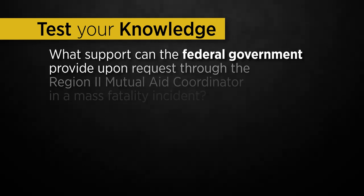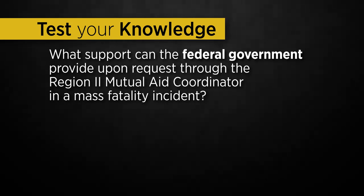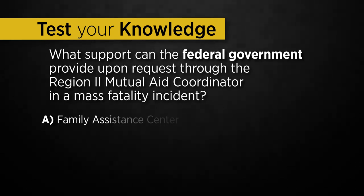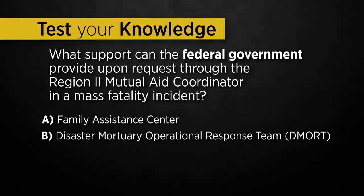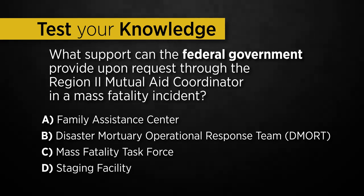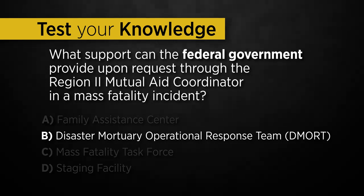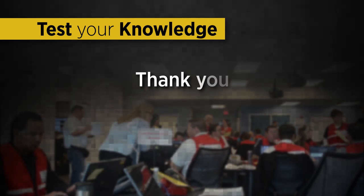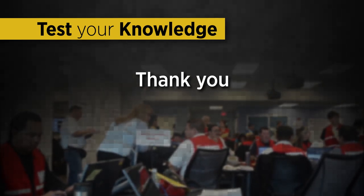What support can the Federal Government provide upon request through the Region 2 Mutual Aid Coordinator in a mass fatality incident? A: Family Assistance Center. B: Disaster Mortuary Operational Response Team. C: Mass Fatality Task Force. D: Staging Facility. The U.S. Department of Health and Human Services at the federal level provides a DMORT to help with victim identification and mortuary services. Thank you for taking the time to test your knowledge about mass fatality operations in an EOC.